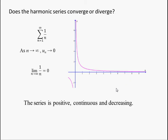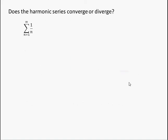You can also see here that the series is positive. n is always positive, so 1 over n is always positive. It's continuous. There's no asymptotes or gaps or holes there. And it's decreasing. Each term is smaller than the one before it. So because of that, we can use the integral test, which is what we're going to do now.